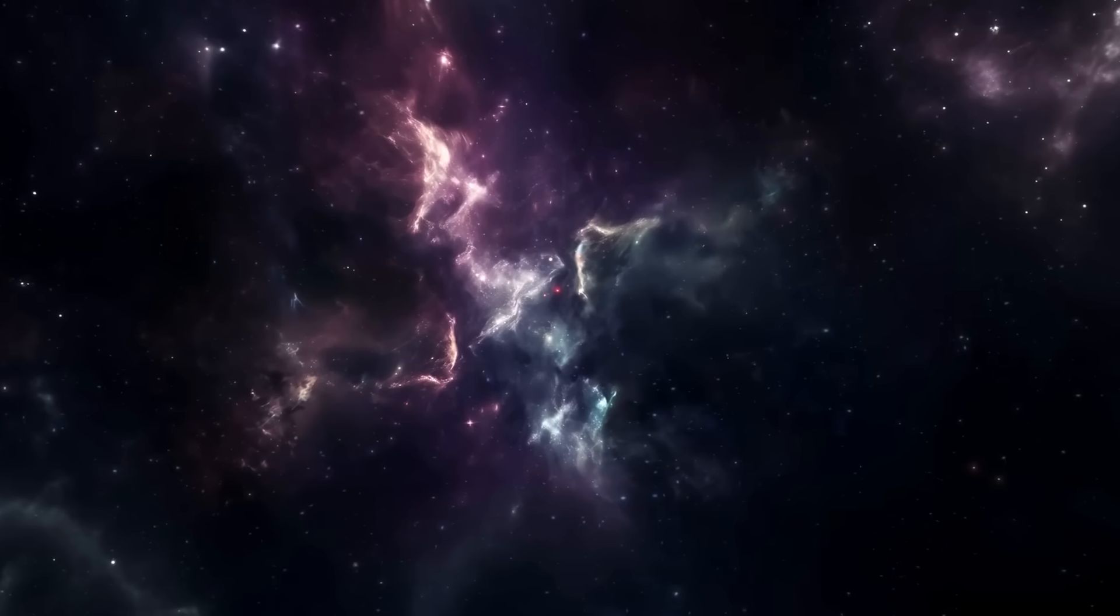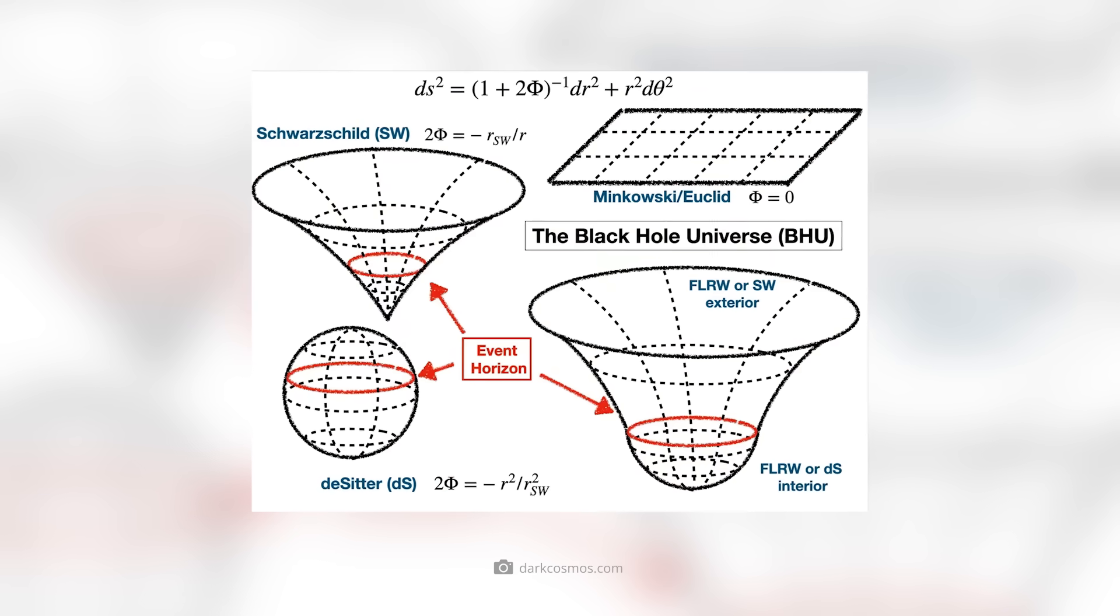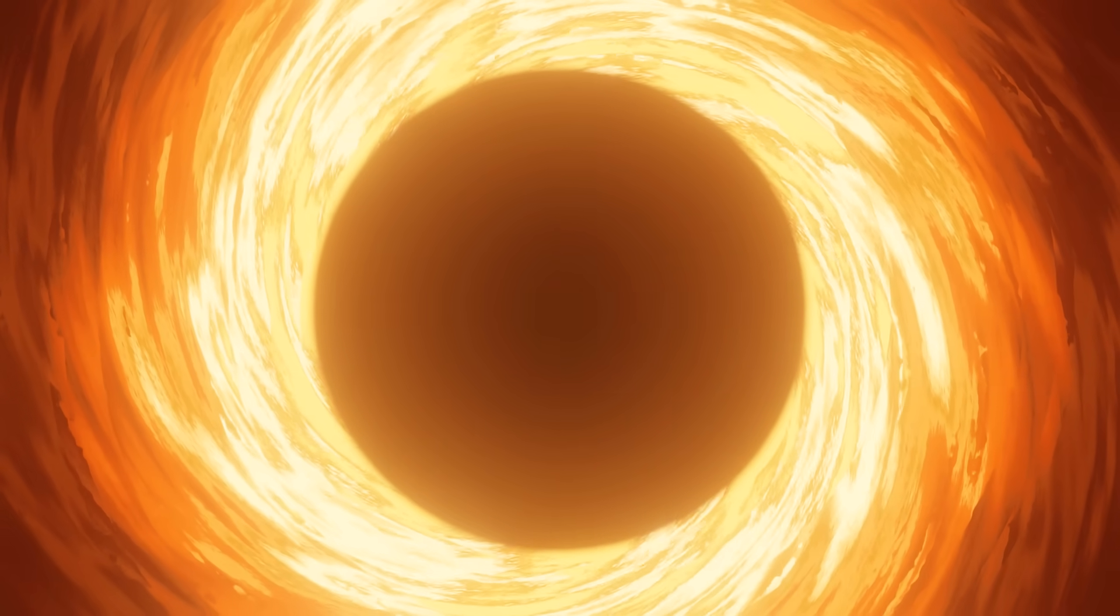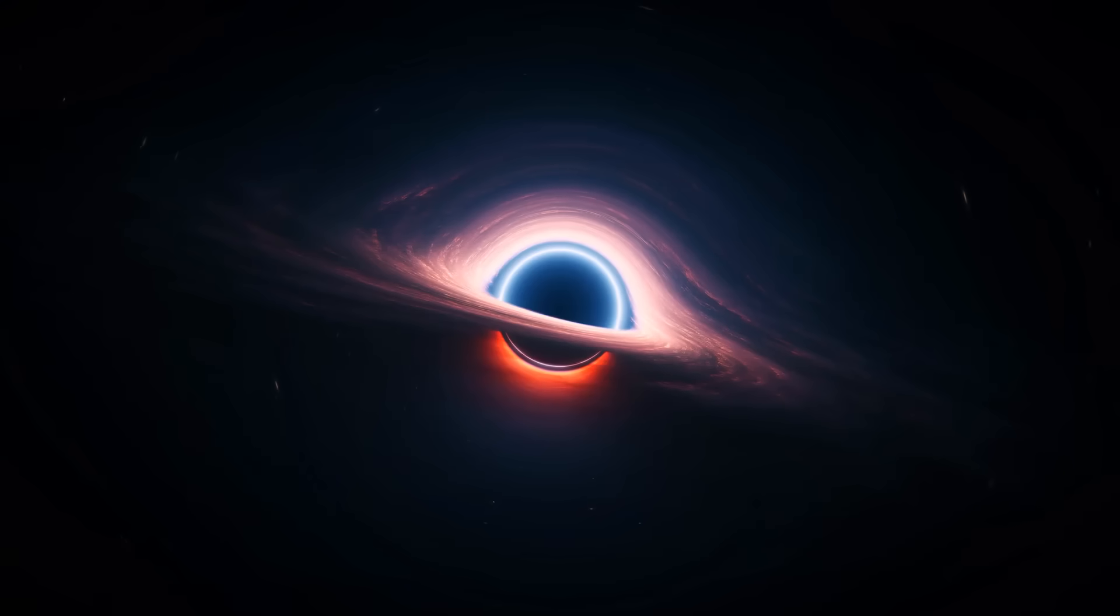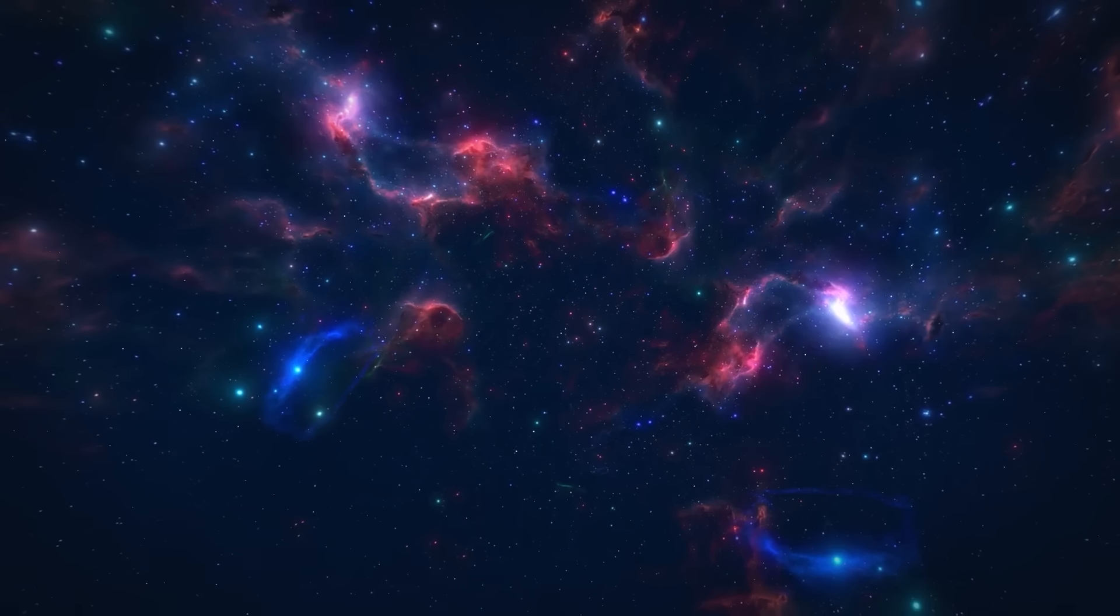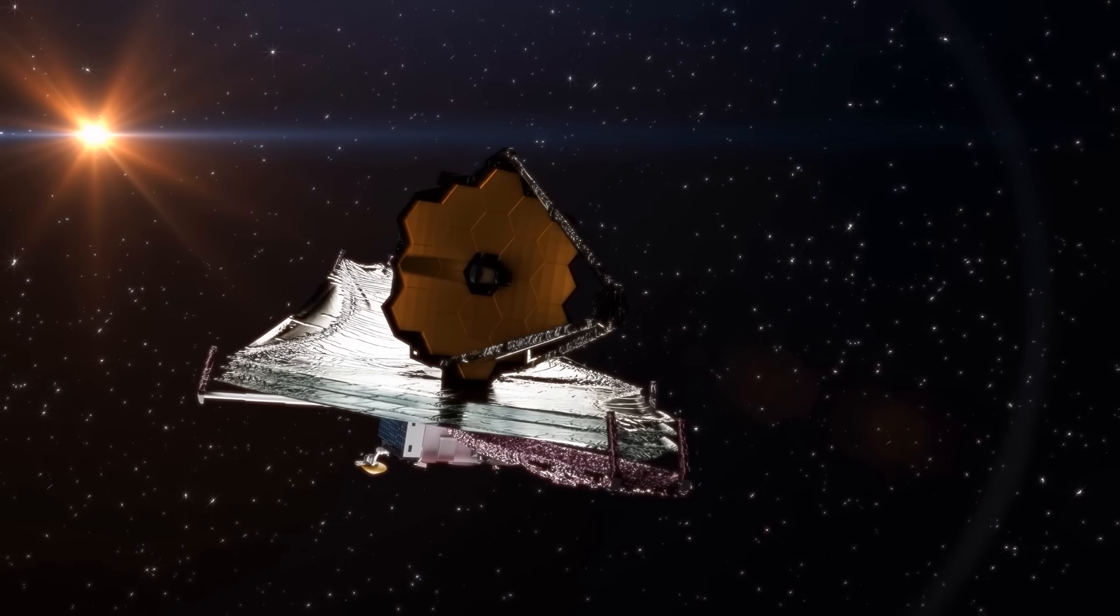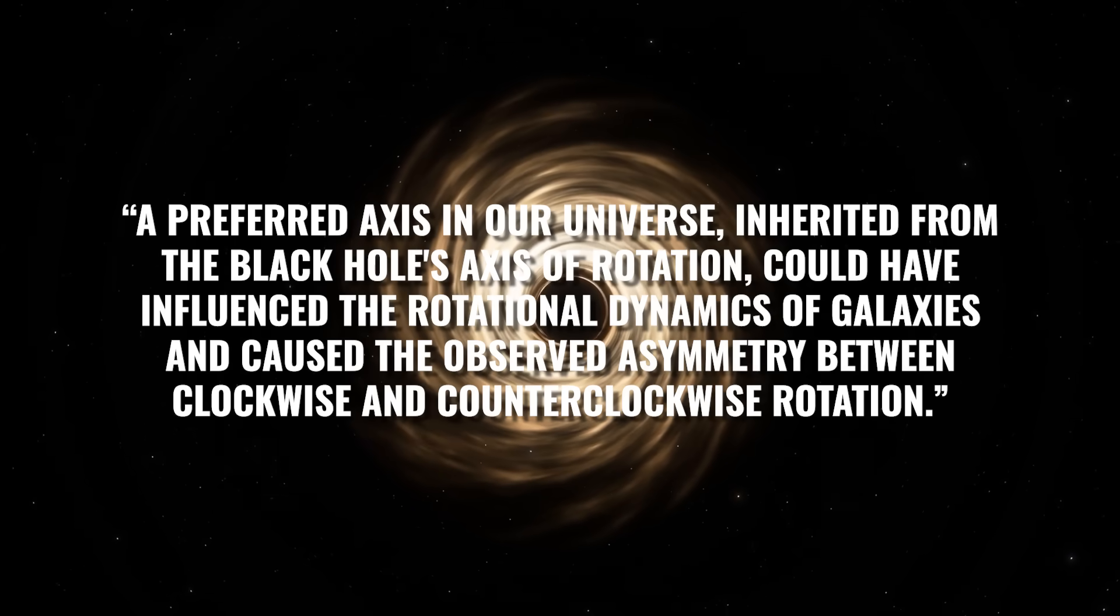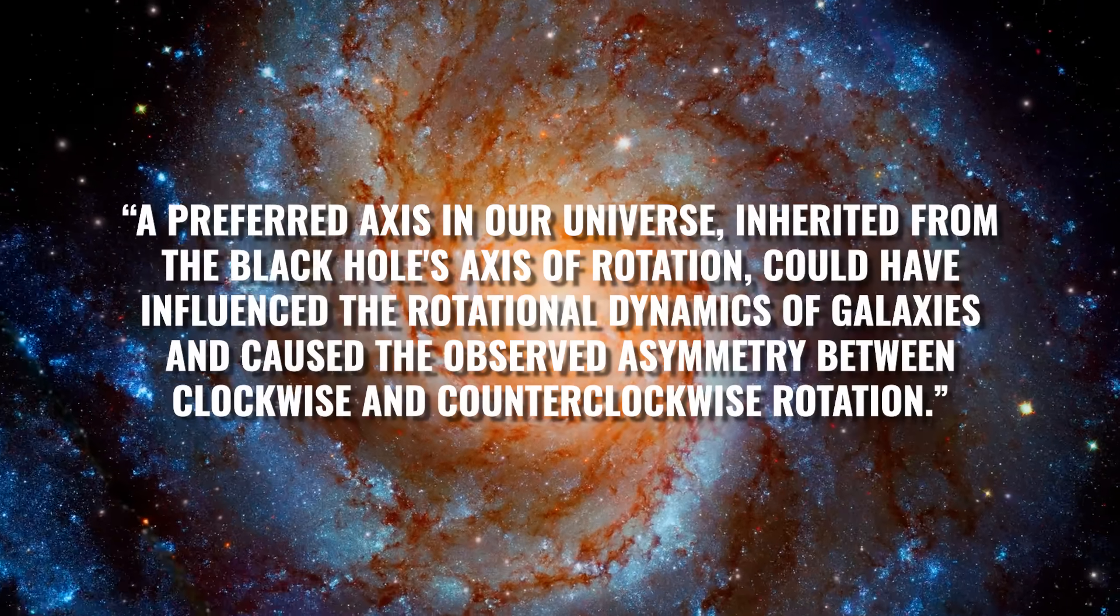But the second approach, and this is the astonishing part, says that our cosmos was created in a black hole that already had its own rotation. This idea is consistent with the so-called Schwarzschild cosmology, which postulates that our universe embodies the interior of a black hole in a larger mother universe. In this context, each black hole would represent the passage to its own baby universe, while the rotation of the original black hole would influence the preferred direction of rotation of the galaxies in the newly born universe. This starting point naturally plays into Nikodem Poplowski's hands, which is why he classifies the James Webb Telescope's observation as follows: A preferred axis in our universe, inherited from the black hole's axis of rotation, could have influenced the rotational dynamics of galaxies and caused the observed asymmetry between clockwise and counterclockwise rotation.